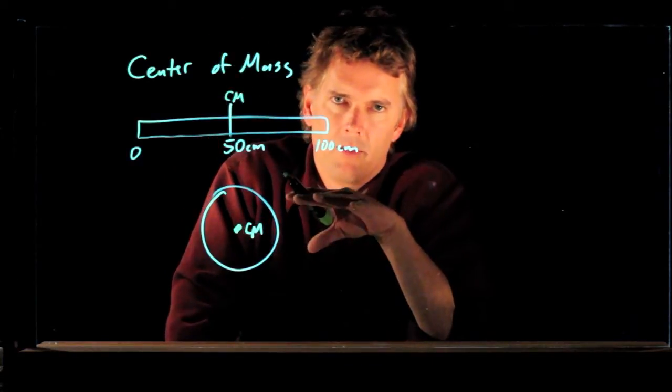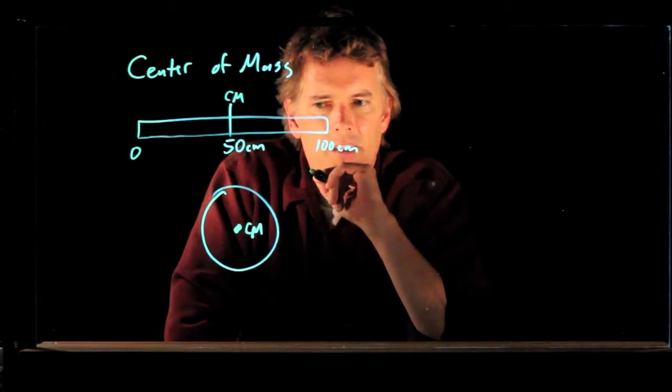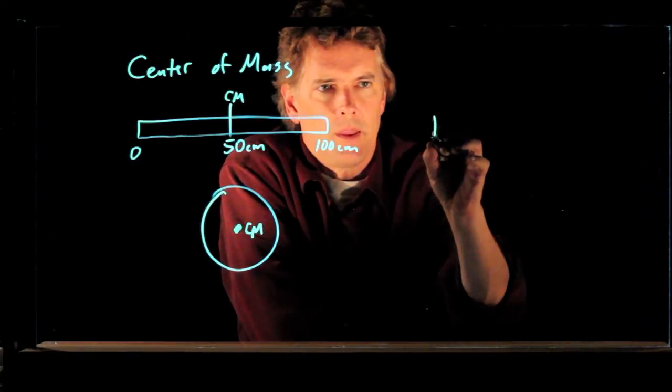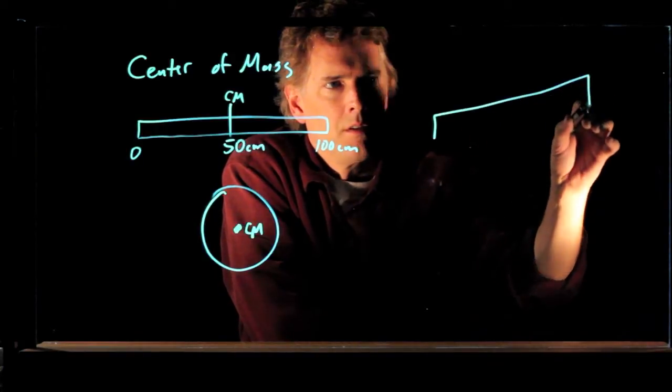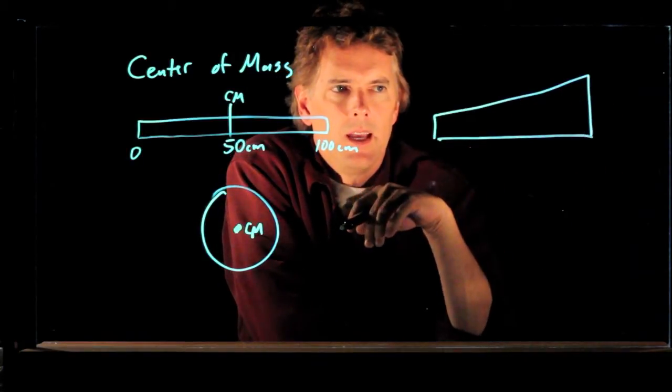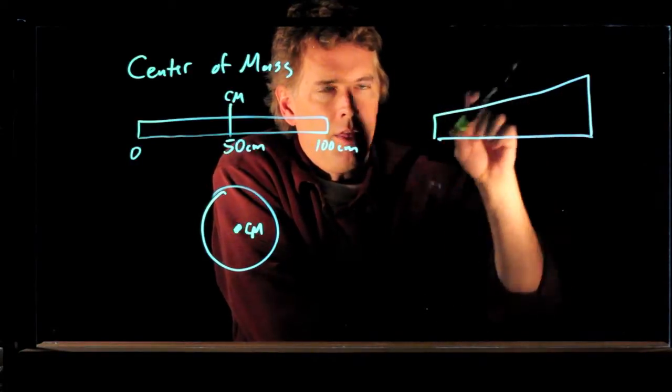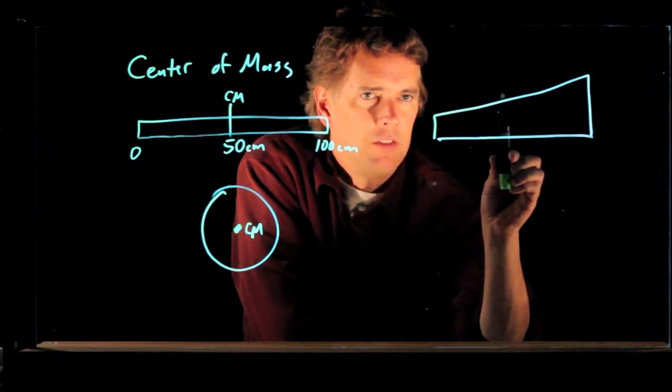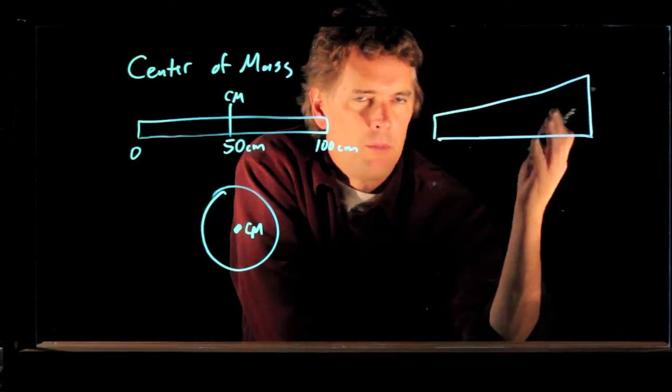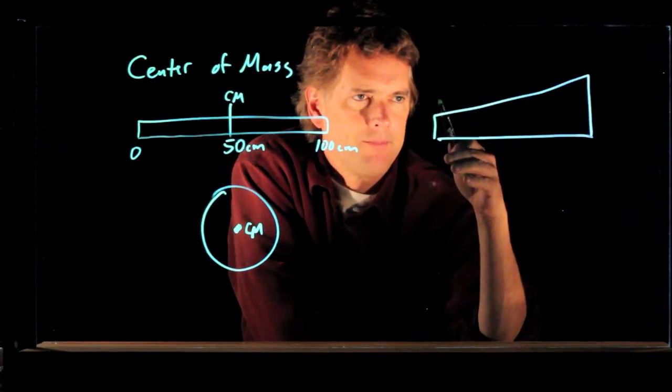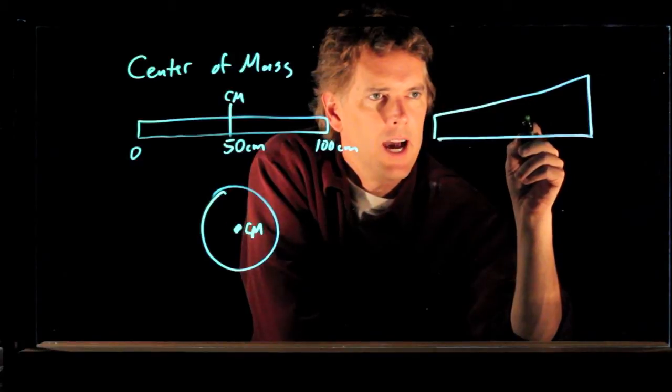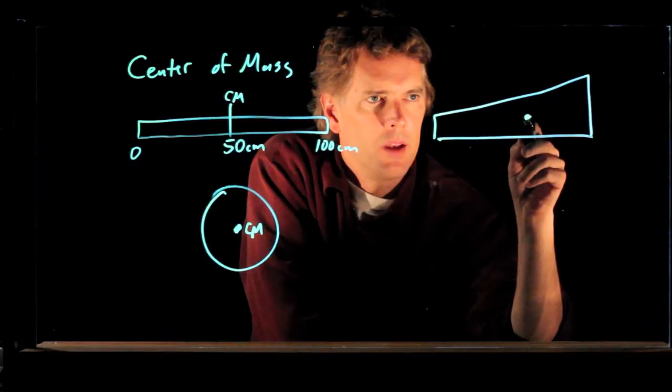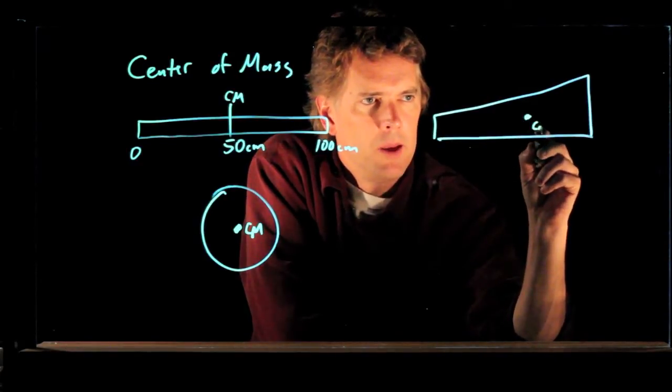So you already know some things about the center of mass, but let's say we have something a little more complicated. Let's say we have something that looks like this. It's an object that is thin at one end and thicker at the other end. So where would you say the center of mass is? Clearly it can't be in the center anymore because there's more mass on the right than on the left. So we take a guess that it's got to be closer to the right side and a little bit higher than the middle, maybe in there somewhere.